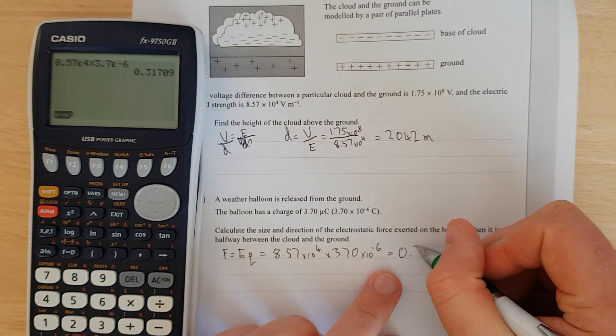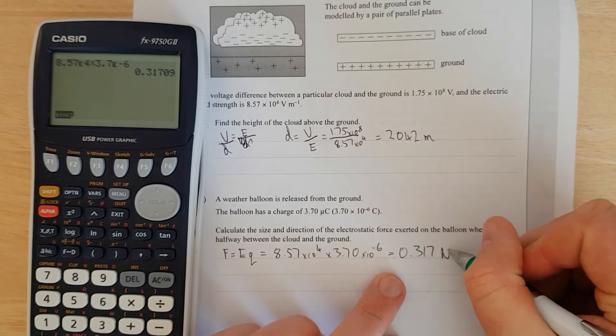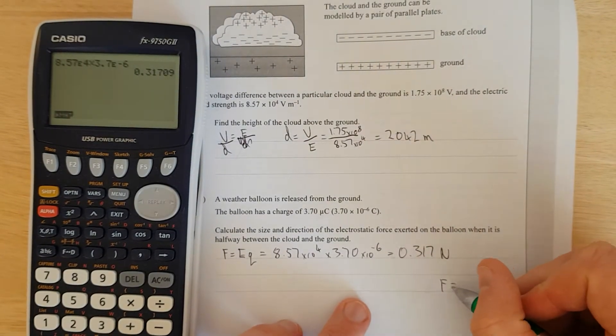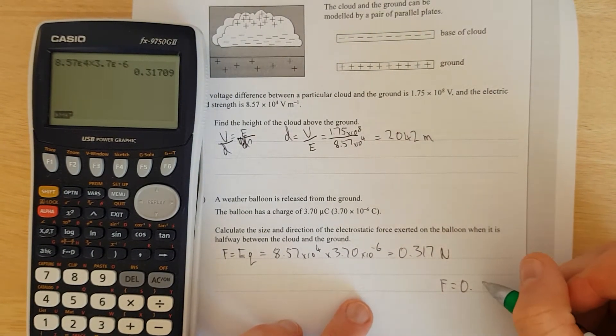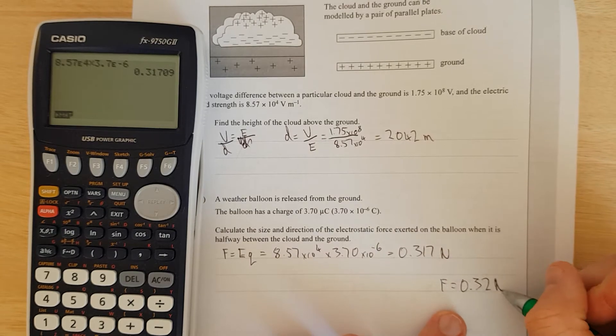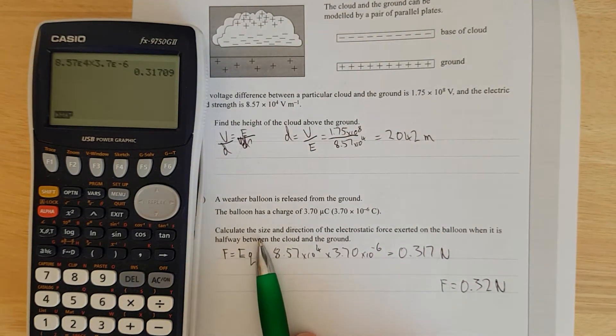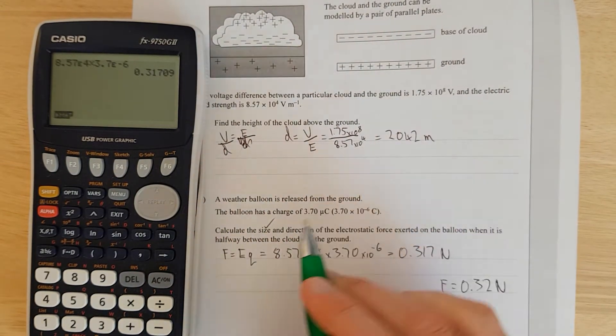8.57 E to the 4 times 3.7 E to the negative 6, and we've got 0.317 newtons. So F is equal to 0.32 newtons. We'll just check, calculate the size, done, and direction.